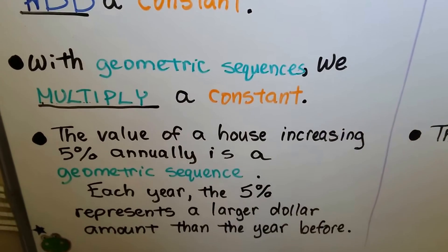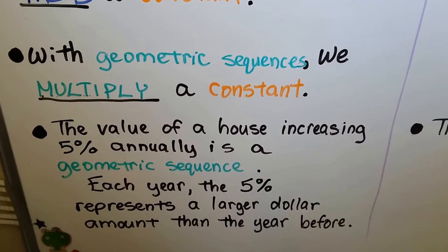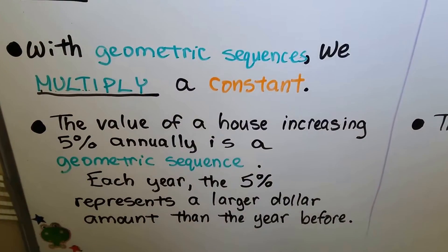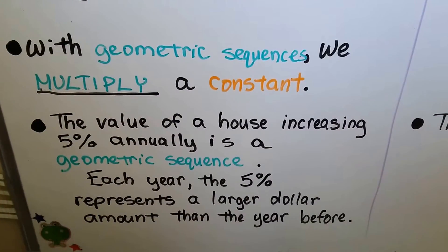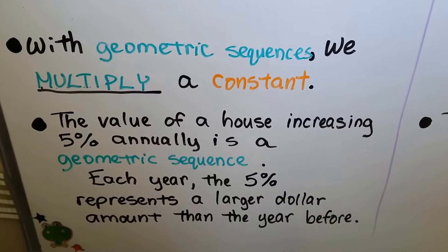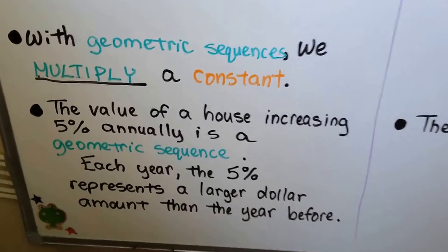The value of a house increasing 5% annually is a geometric sequence because each year the 5% represents a larger dollar amount than the year before because it's increasing each year.